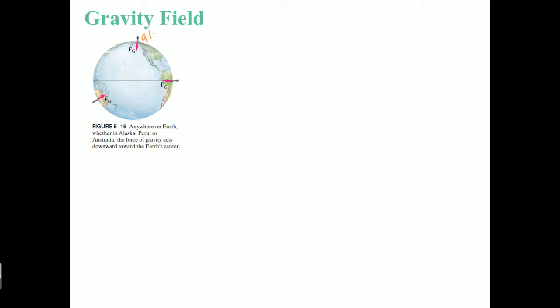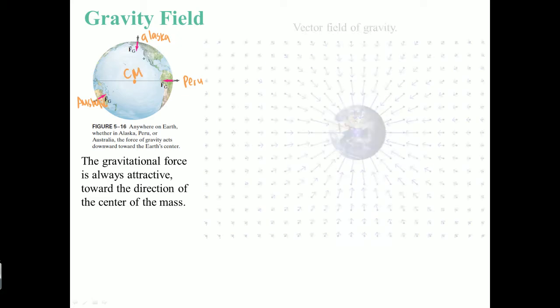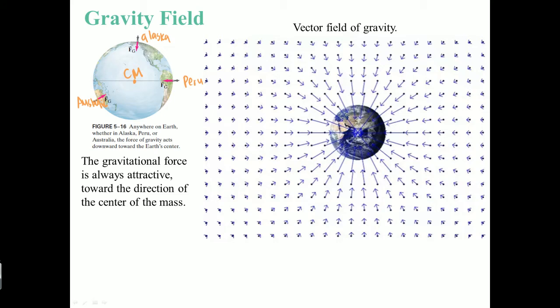The gravity field: anywhere on Earth — whether you are in Alaska, Peru, or Australia — you see that the force of gravity acts towards the center of the Earth. The gravitational force is always attractive towards the direction of the center of mass. The strength of the vector field gets stronger as you approach the center of mass of Earth.